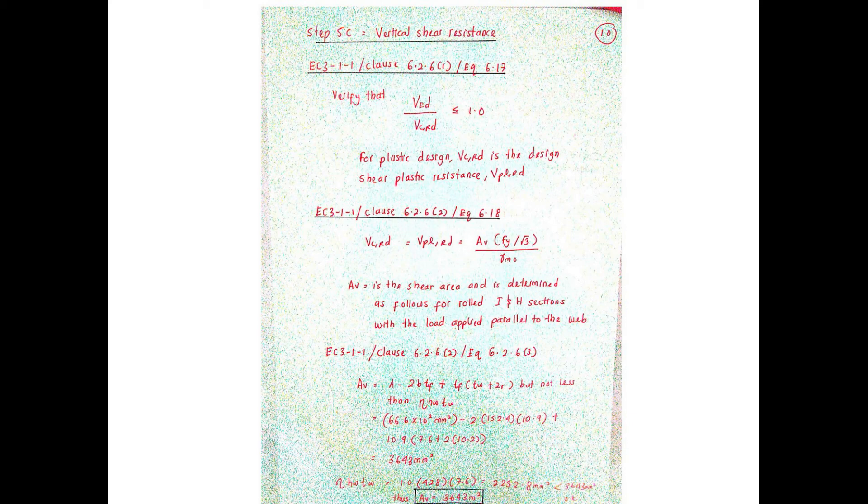Vpl,Rd, which is the plastic resistance design, can be calculated based on EC3 part 1-1, clause 6.2.6(2), equation 6.17, in which Av is the shear area and is determined as given in EC3 part 1-1, clause 6.2.6(2), equation 6.17, the shear resistance design and the shear area of the considered beam.